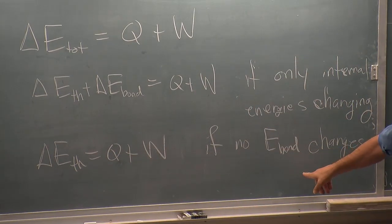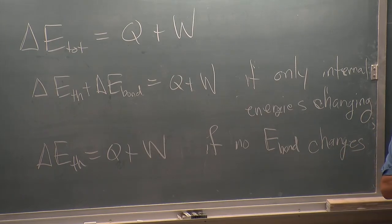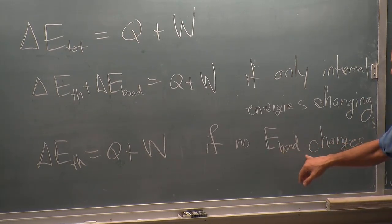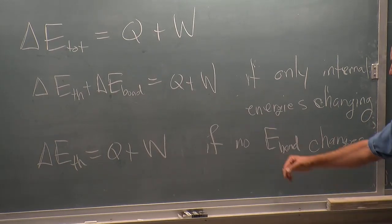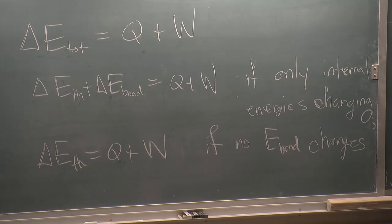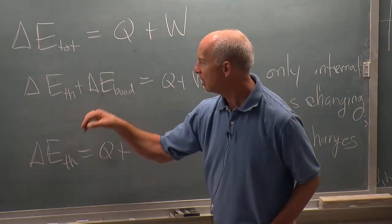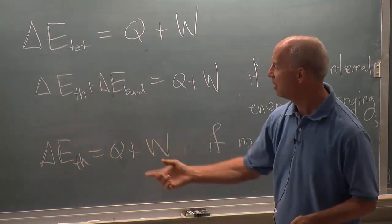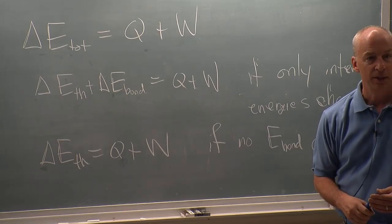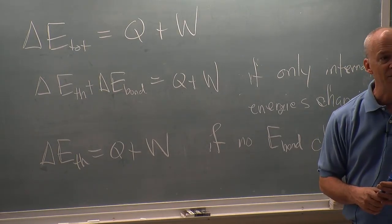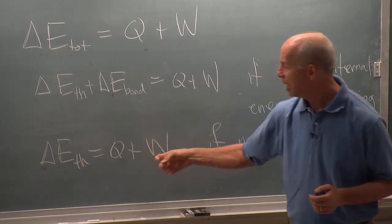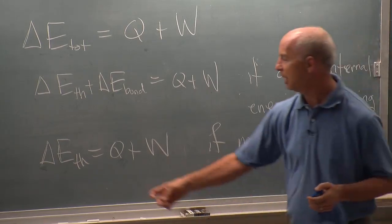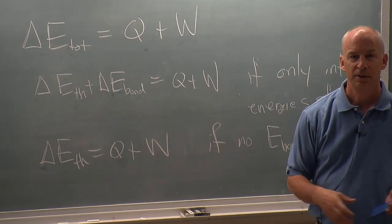Often we talk about things where the bond energy doesn't change. If we're talking about changes in thermal energy and we want to change the temperature, then we're probably staying away from phase changes and chemical reactions — those are the places where bond energy changes. If we stay away from those things and there's no bond energy change, that term is zero. Then the change in thermal energy — indicated by a change in temperature — is just due to two energy transfers. If thermal energy goes up, Q plus W is positive; if it goes down, Q plus W is negative.